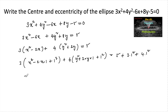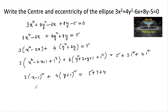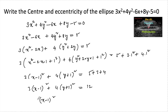So that gives us 3(x - 1)² + 4(y + 1)² = 5 + 3 + 4. We have 3(x - 1)² + 4(y + 1)² = 12. Dividing both sides by 12: (x - 1)²/4 + (y + 1)²/3 = 1.